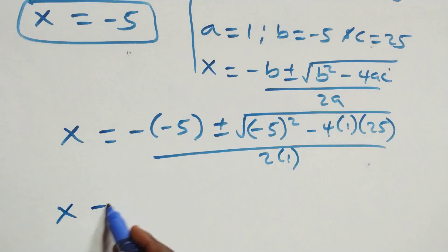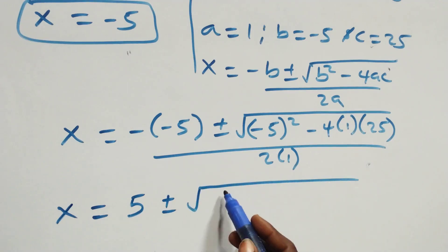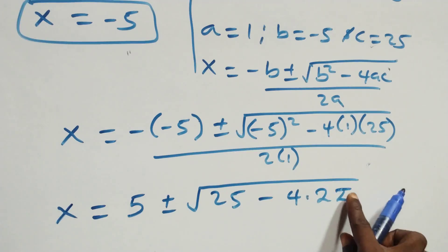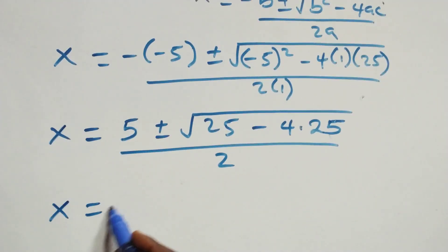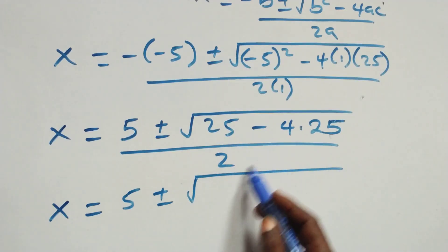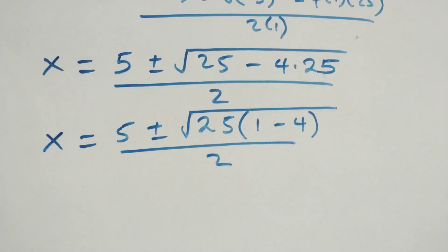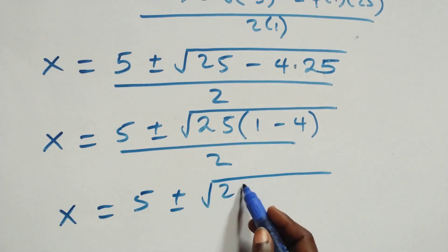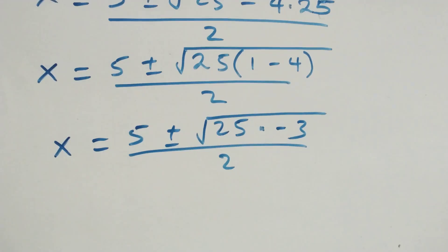Minus times minus is plus, so we have x equals 5 plus or minus square root of 25 minus 4 times 25, over 2. We factor 25 as common: x equals 5 plus or minus square root of 25 times 1 minus 4, that's minus 3, over 2. This gives two complex solutions.